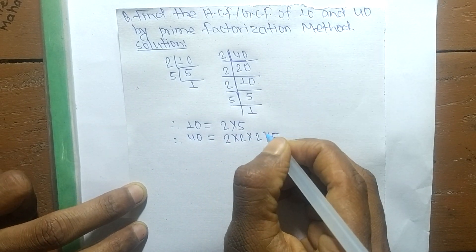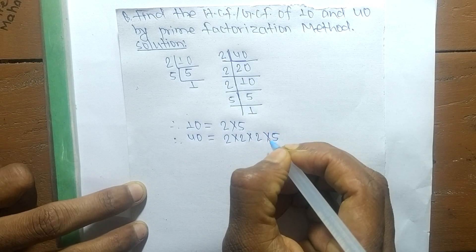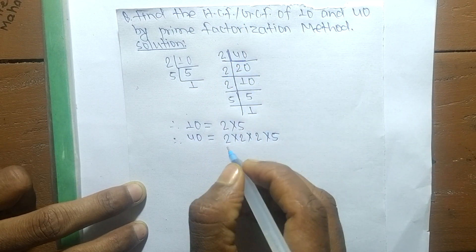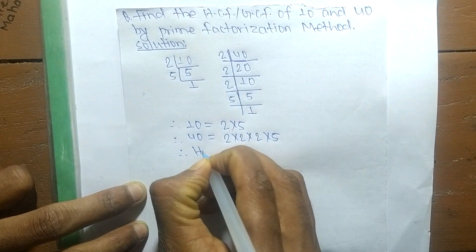After writing out the prime factors, we are finding the HCF or GCF.